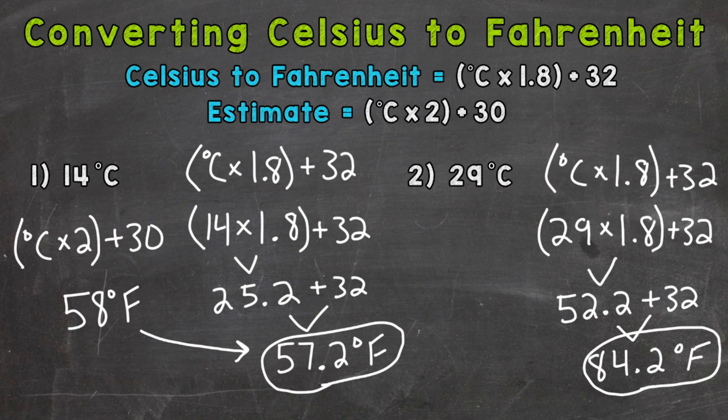Now, as far as the estimation for number two, we are going to use the formula right here. Degrees Celsius times 2 plus 30. So 29 times 2 is 58 plus 30 gives us an estimate of 88 degrees Fahrenheit. So the estimation formula gave us an approximate or close answer to the exact conversion, and we were able to compute that using mental math.